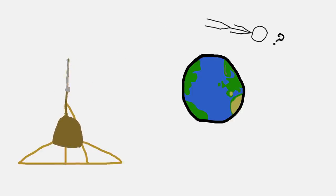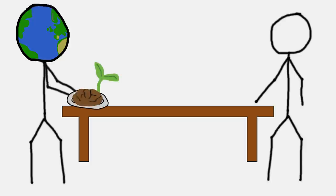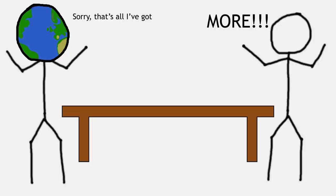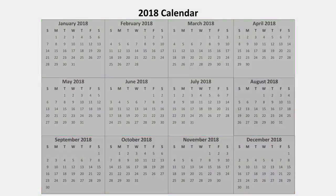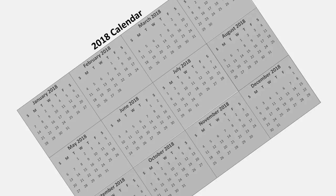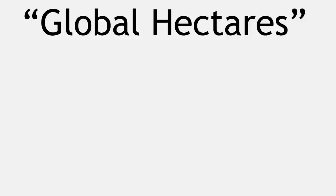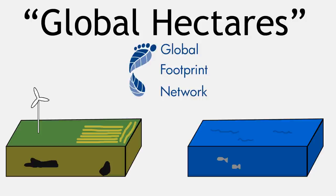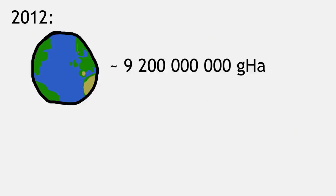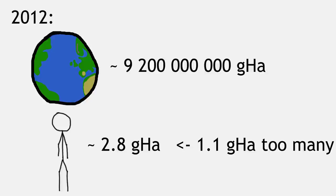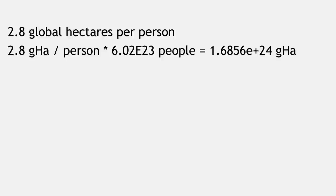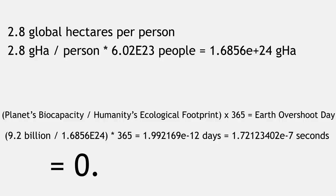What's Earth Overshoot Day? It's a way to show how much of the Earth's resources we're using. The Earth creates a finite amount of resources each year. People on the planet use more resources in that year than the planet creates. The estimate of when we use up a year's worth of Earth's resources is referred to as Earth Overshoot Day. In 2018, that fell on August 1st, meaning we used up all the resources the Earth would make in a year in just 7 months. But that's just 7 billion people. We're going to measure in global hectares — which, to paraphrase Global Footprint Network, is how productive all the land and sea area in the world is in a given year. In 2012, the Earth had a capacity of 9.2 billion global hectares, while the average person required 2.8 global hectares each. This led to a deficit of 1.1 global hectares per person. But if we had a mole of people, that would require 1.7 times 10 to the 24th global hectares, which would burn up a year of the Earth's resources in 0.000000172 seconds.